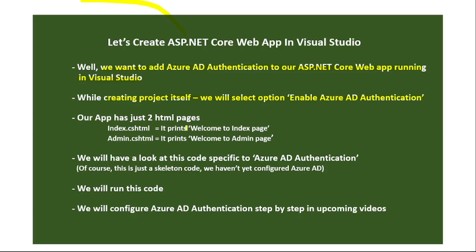Our app will have just two simple HTML pages: one is index.cshtml, which will show 'Welcome to Index Page', and another is admin.cshtml, which will show 'Welcome to Admin Page'. In our upcoming videos, we will modify our app such that index.cshtml will be accessible to every user, but admin.cshtml will only be accessible to admin users. For that, we will add roles as well.